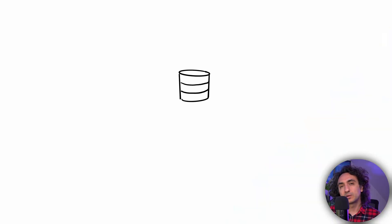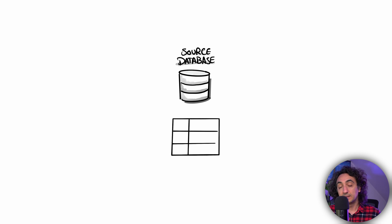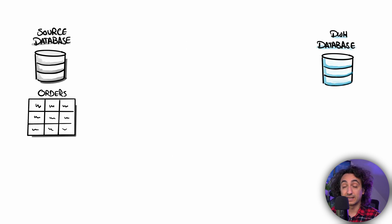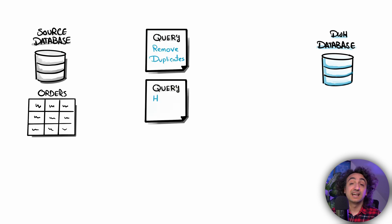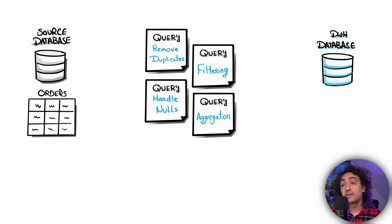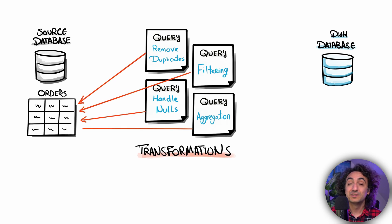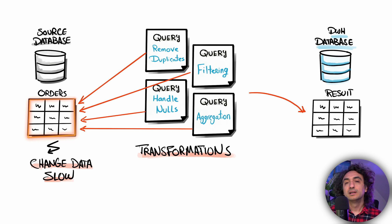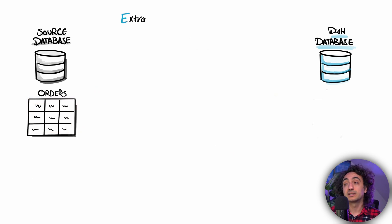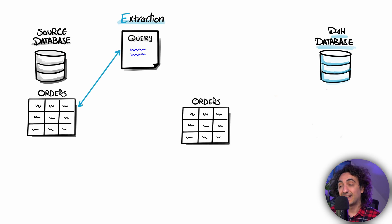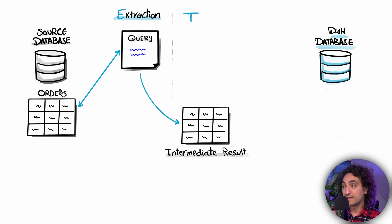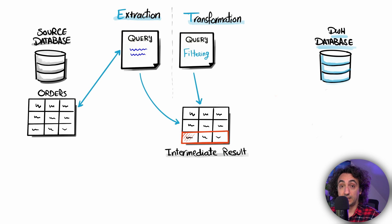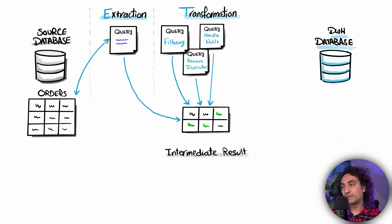Why do we need temporary tables? In a source database we have an orders table, and we want to load it into a data warehouse requiring several transformations — removing duplicates, handling nulls, filtering, cleaning, and aggregating data. You cannot do this directly on the source database. So we use temporary tables: one script extracts data from orders into a temporary table, then transformation queries manipulate that copy.